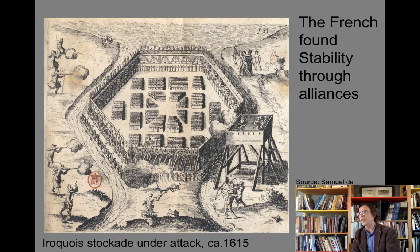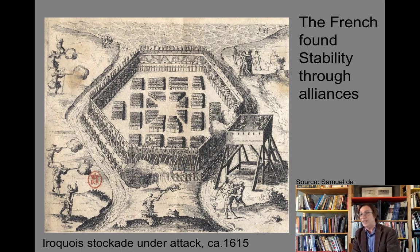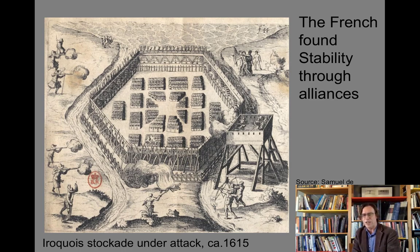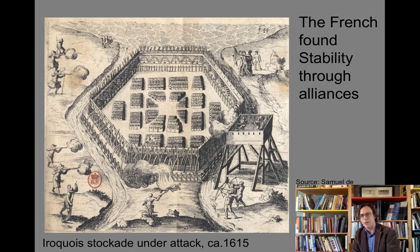In the long term, people ask whether indigenous people benefited equally — and the answer is no. But in the short term, they were making a calculation that they were receiving benefits they found acceptable. Which is not to say they somehow agreed to the larger patterns of history — they didn't. They were agreeing to trade issues on the ground, fairly simple matters. In the long term, it wasn't the right course, but they couldn't possibly have known that.